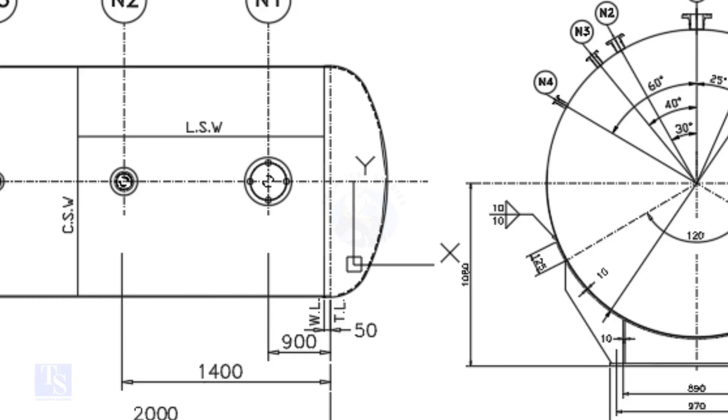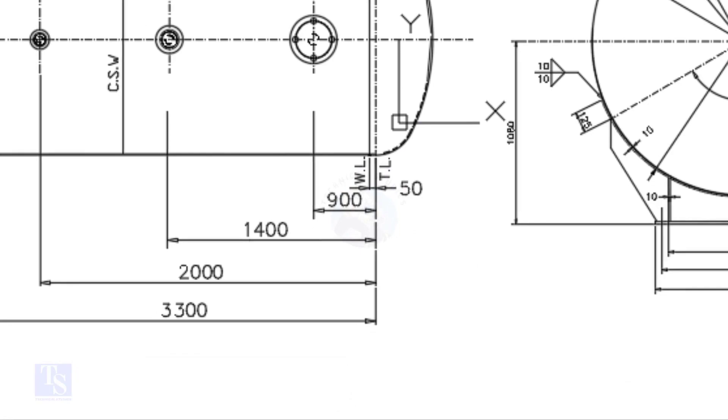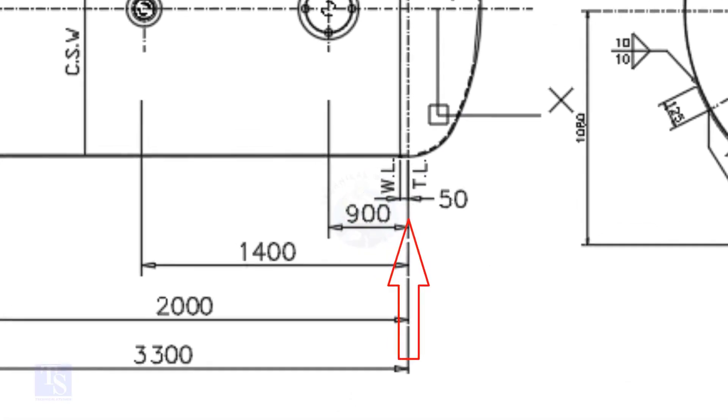In this drawing, the nozzle center distance is starting from the TL. In some drawings, you may see the nozzle center is given from the WL. So before starting the marking, carefully see these things.